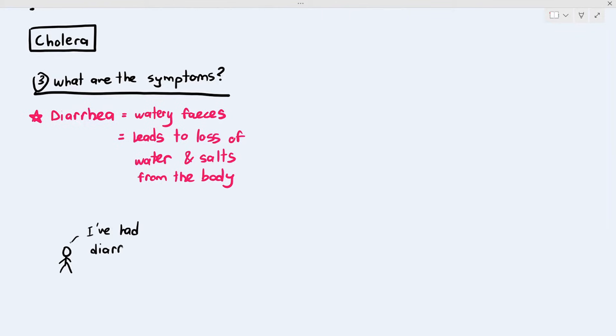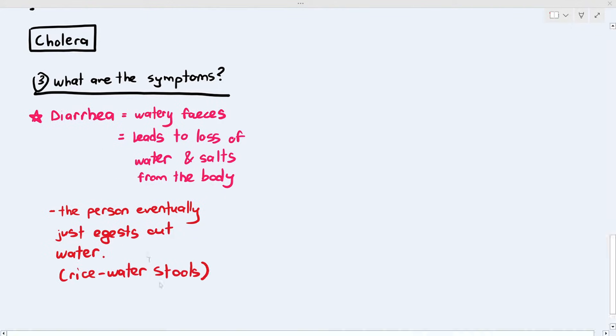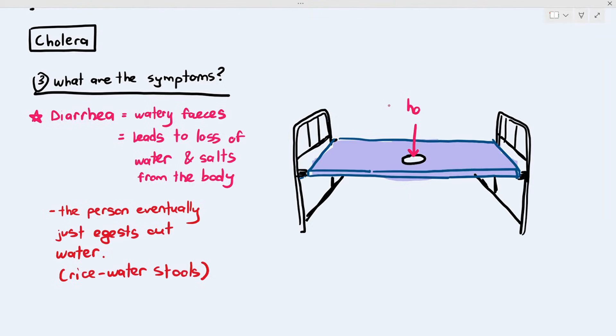Now, right off the bat, you might be thinking, well, I've had diarrhea before. It doesn't sound like a very serious thing. Oh no, the diarrhea that you get from cholera is quite serious because the person starts pooping out watery feces, which is brownish in color, but eventually what the person ingests or poops out is just water. It will not be brown in color anymore. It will just be like a whitish or clear water, and we call it rice water stools.